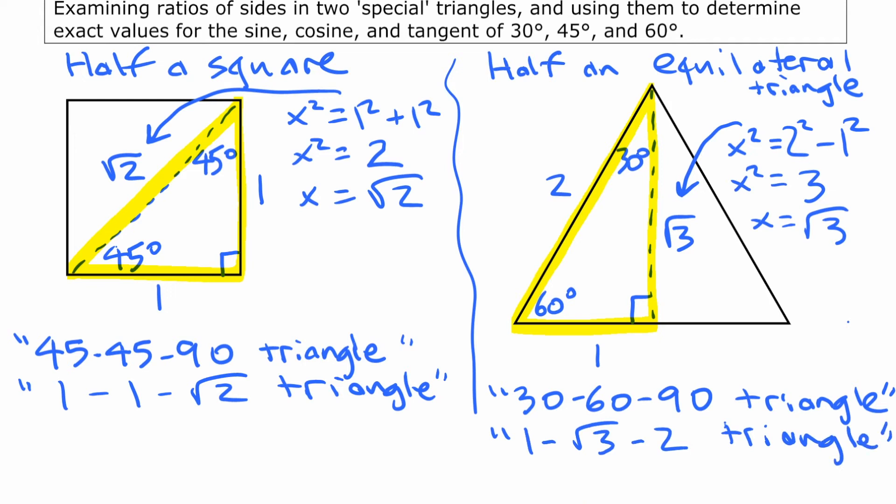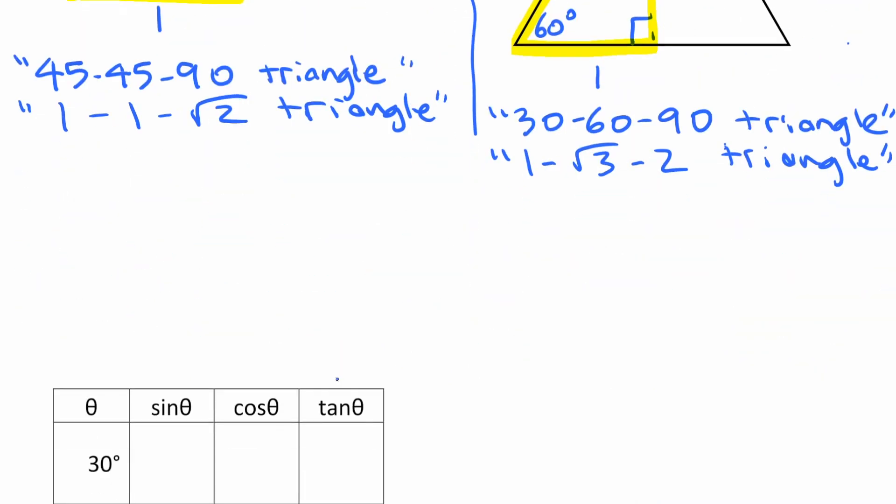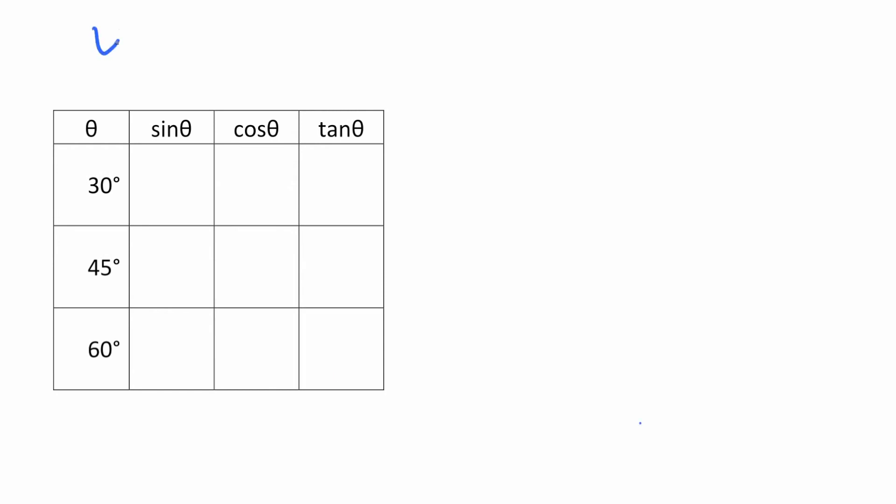Now, at first, sometimes people feel like they want to call it a 1, 2, root 3 triangle just because it kind of matches the way the other one is named with the root at the end. The problem is you end up mixing up those two things and labeling the triangle wrong. You want to have that 2 as the largest side. What we're going to do now is use those two special triangles to write some exact trig ratios for those three common angles.